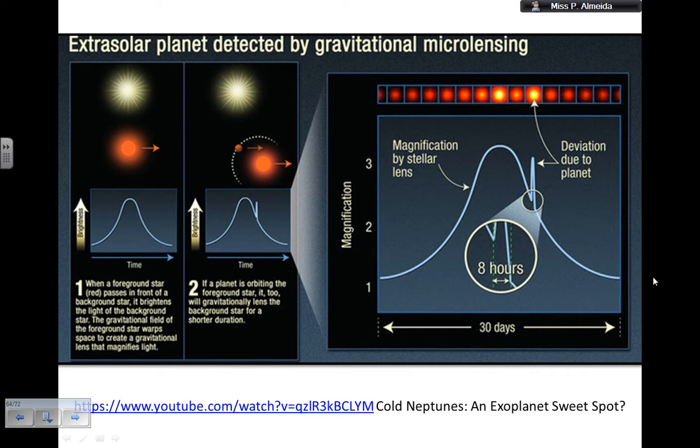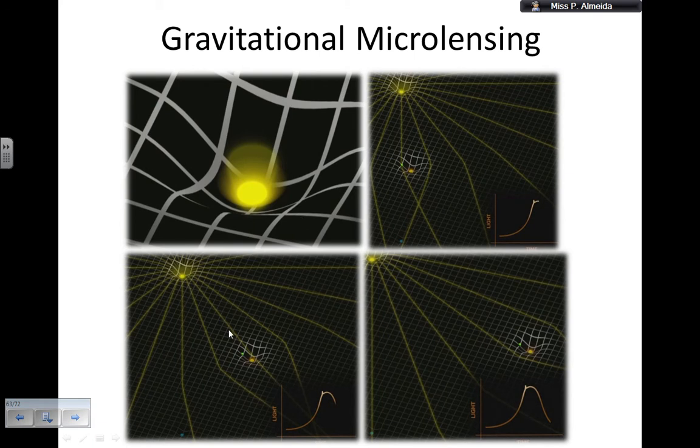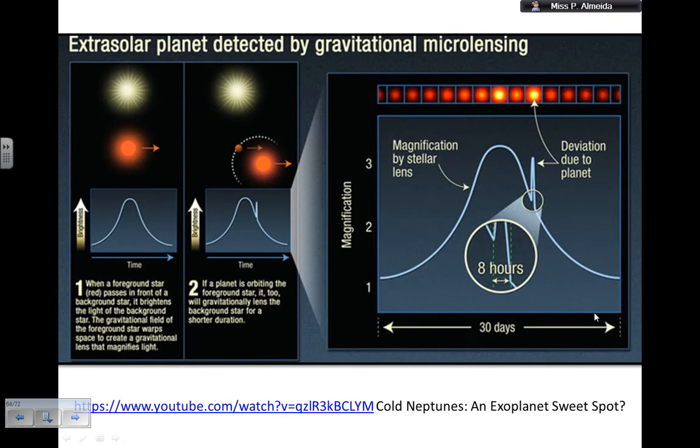So again, this is because the star, for example in here, this one is the best picture really. You have the bending due to the planet and the star. So this is gravitational microlensing.